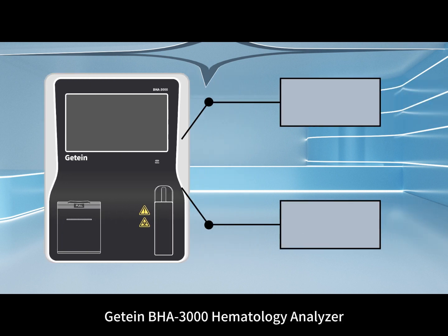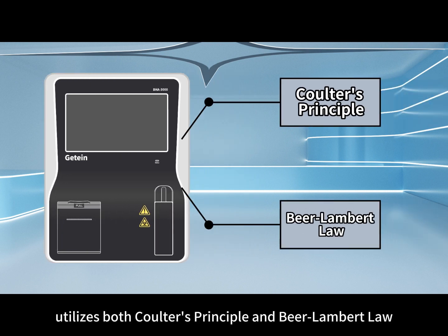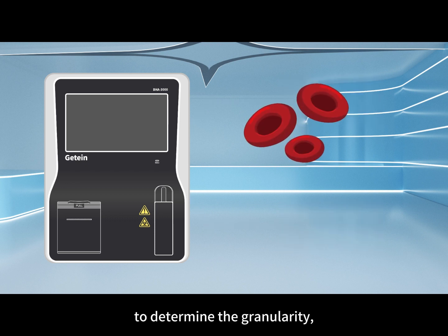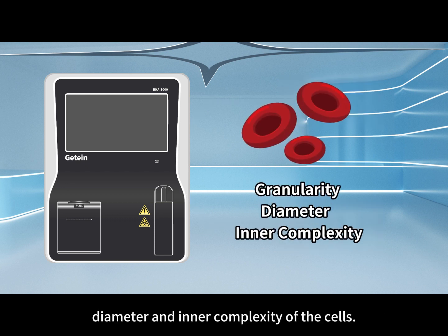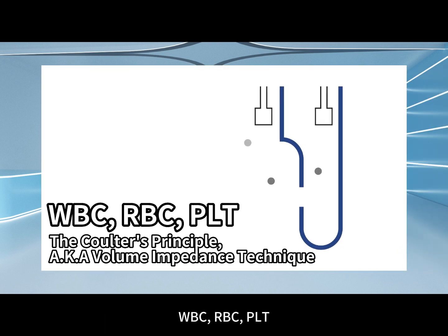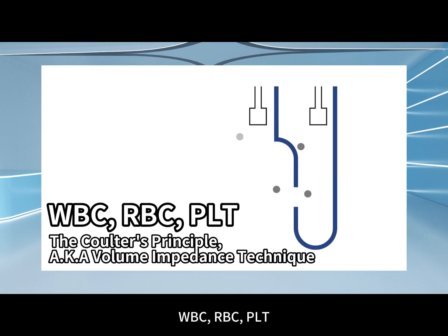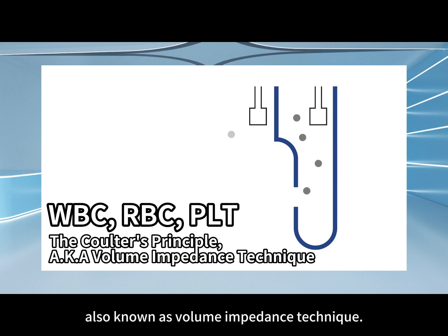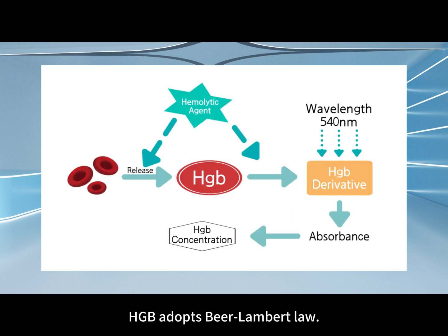The BHA 3000 Hematology Analyzer utilizes both Coulter's Principle and Beer-Lambert Law to determine the granularity, diameter, and inner complexity of the cells. WBC, RBC, and PLT adopt Coulter's Principle, also known as the Volume Impedance Technique. HGB adopts Beer-Lambert Law.